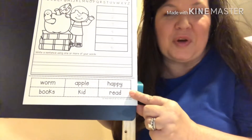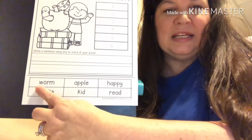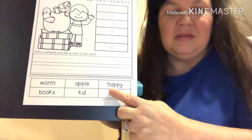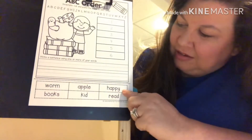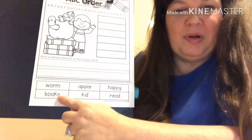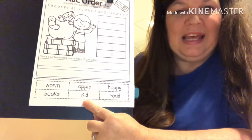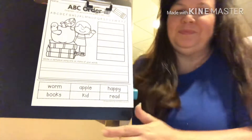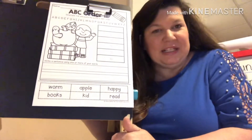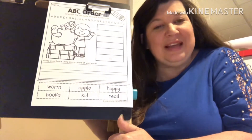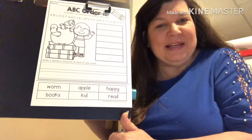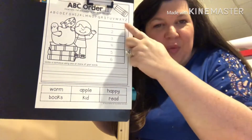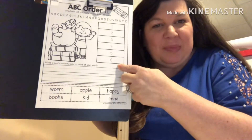I'm going to bring it in closer for you. The words are: worm, apple, happy, books, kid, and read. So what we're going to do is put these words in ABC order, and there's a little place for us to put our words in order right up here.